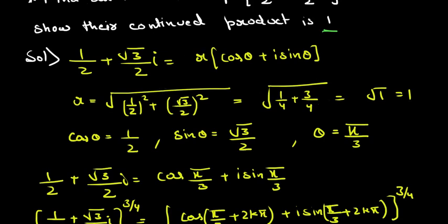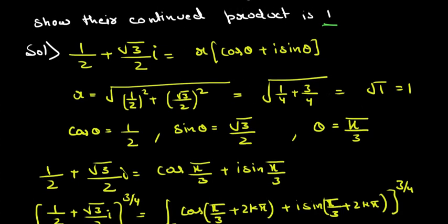Now we have to find θ. We know that cosθ = x/R. Here x = 1/2 and R = 1, so cosθ = 1/2. Similarly sinθ = √3/2. Since cosθ = 1/2 and sinθ = √3/2 both correspond to π/3, we get θ = π/3.